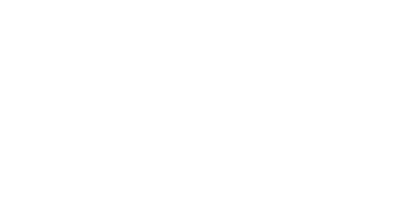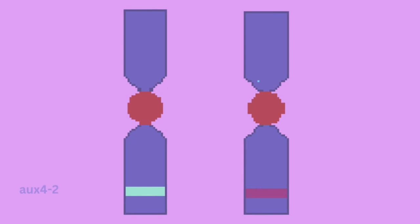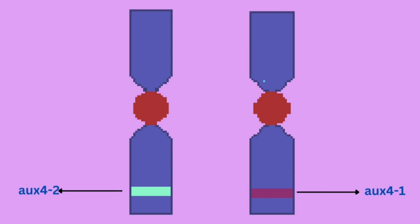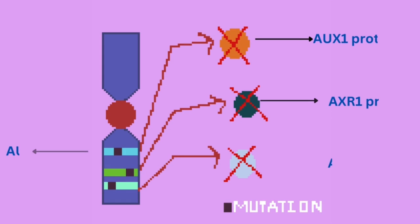The AXR1 and AUX1 mutations are recessive as well and result in almost the same phenotype as AXR4 mutant plants. The AXR4-1 and AXR4-2 mutations were found to be allelic — that is, they are alternative forms of the same gene caused by mutation and are found in the same place on a chromosome. These mutations were found to be non-functional alleles — that is, these mutations cause a lack of production of gene products.